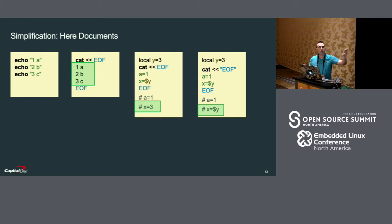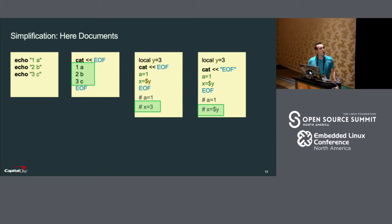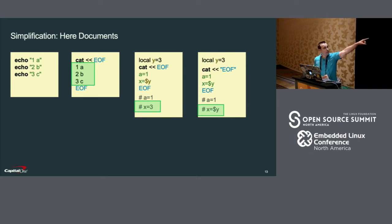Now, if you don't want variable evaluation to happen, it's really easy. In the last block, the end-of-file marker is in quotes. That tells bash that it should not interpret this text — it should not replace any variables in it. So you see the variable y was not replaced.